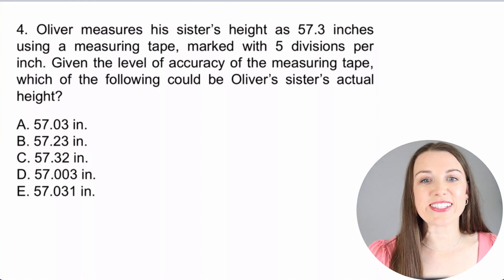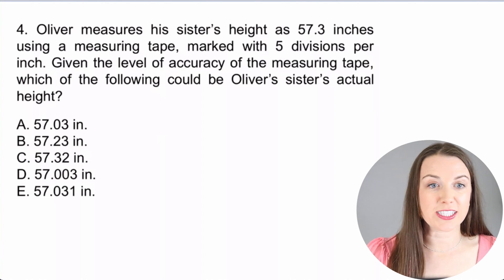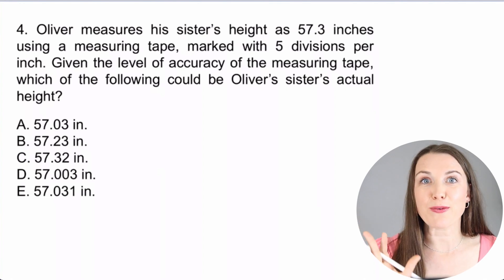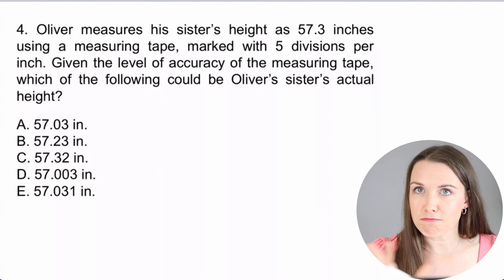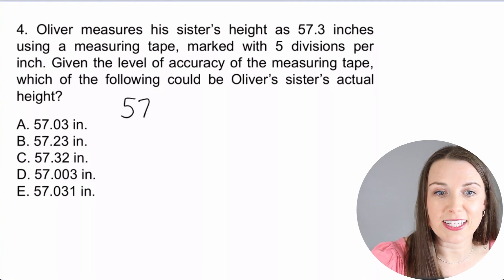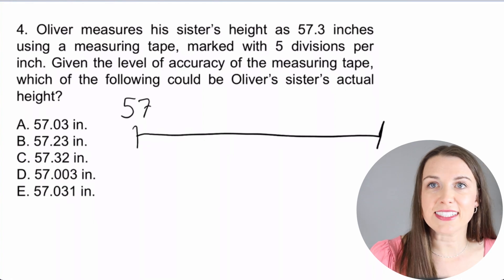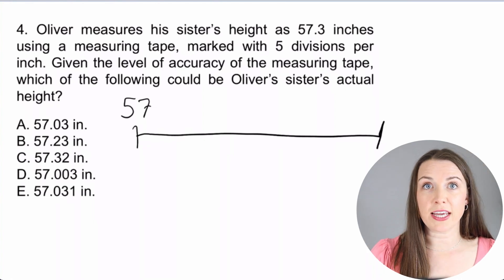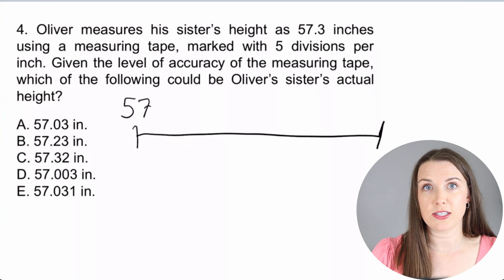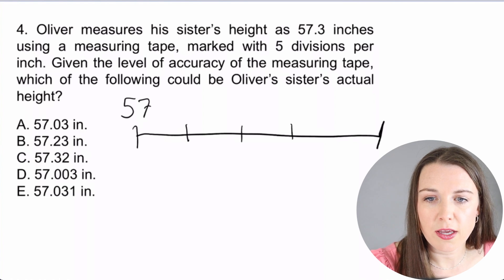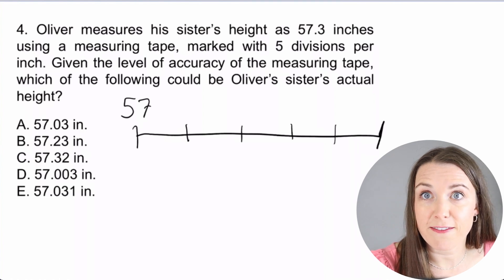Oliver measures his sister's height at 57.3 inches using a measuring tape marked with five divisions per inch. Okay, so let's stop right there and draw the 57, which is what the inches is going to be, right? And then we have the one inch mark. And it says that the inches are broken into five different divisions, okay? So I'm going to do my best to just kind of mark this into five spots. So I have one, two, three, four, and then the fifth one right down there.